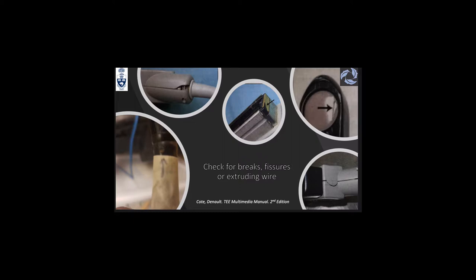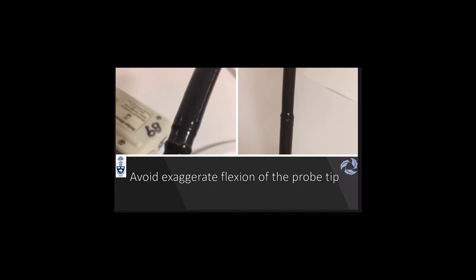As examples of equipment damage, you can see breaks, fissures, and cracks — all of these need to be checked before introducing the probe into the patient. If you exaggerate flexion of the probe tip, this is the most common result: over time the cover gets damaged and erosion occurs, which can cause an electrical issue.